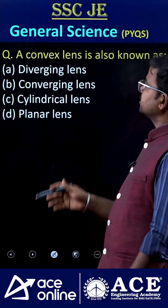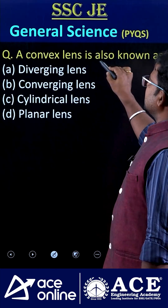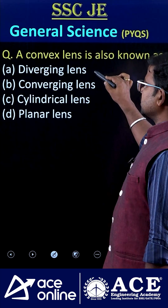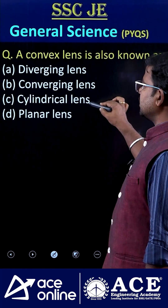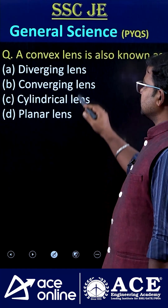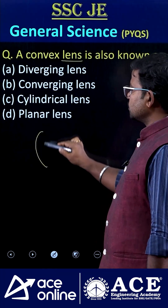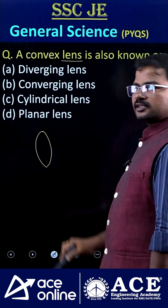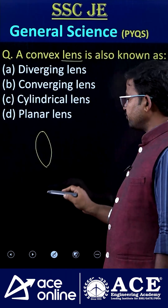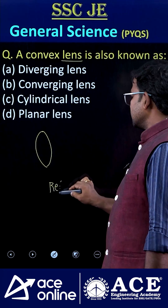Welcome to Ace Online. A convex lens is also known as — is it a diverging lens, converging lens, cylindrical lens, or planar lens? A convex lens looks like this, and the name of the phenomenon involved is refraction.